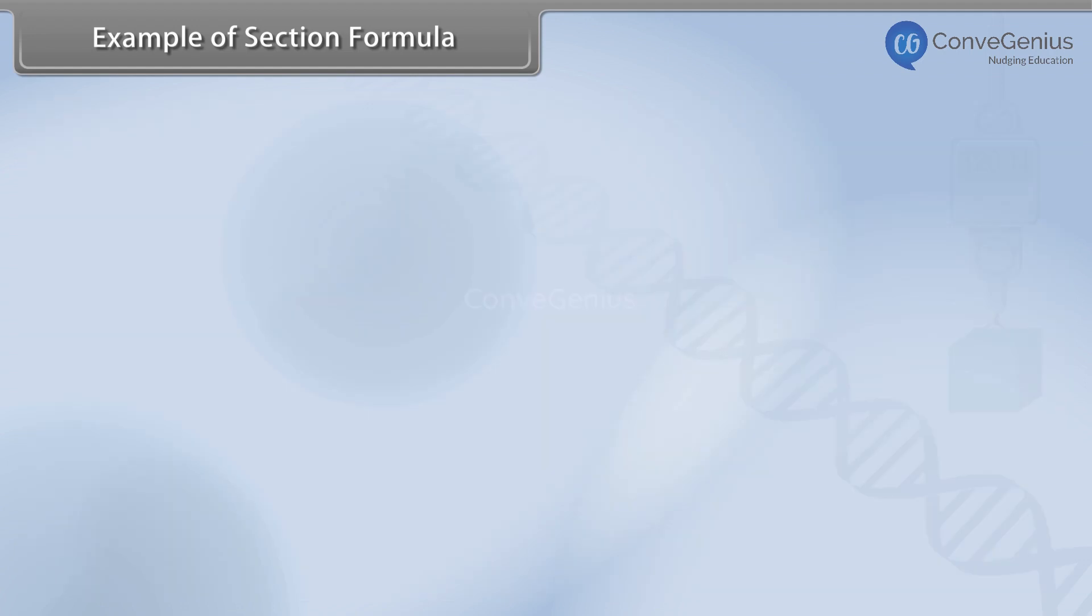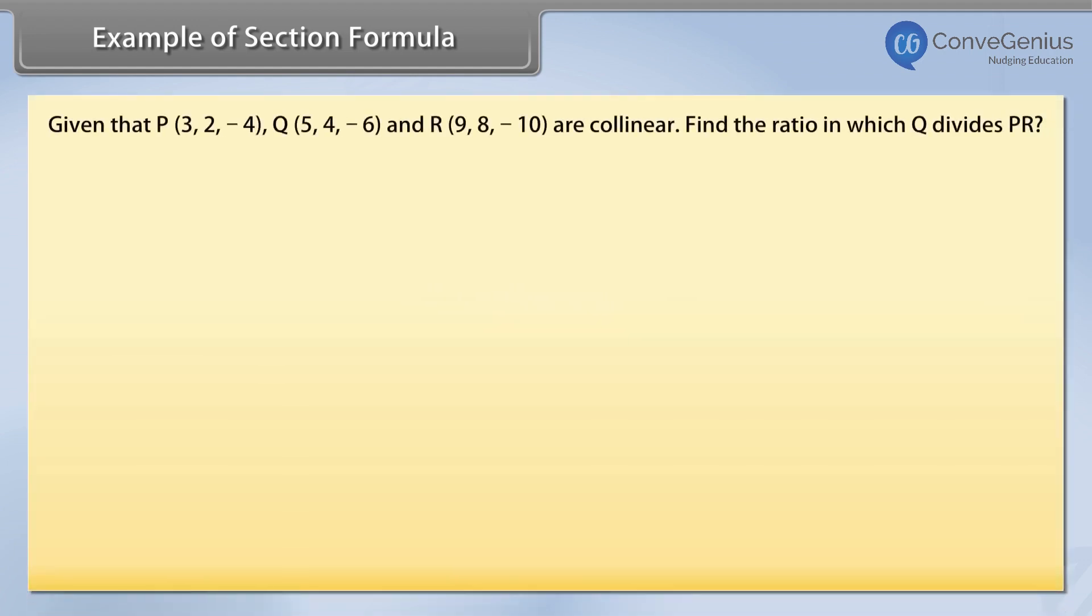Example of section formula. Given that P (3, 2, -4), Q (5, 4, -6), and R (9, 8, -10) are collinear, find the ratio in which Q divides PR.